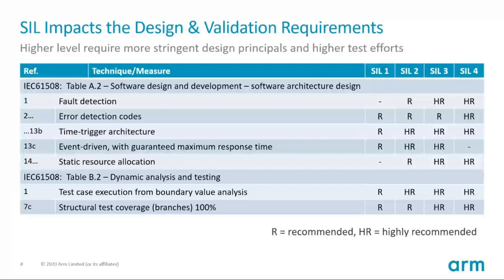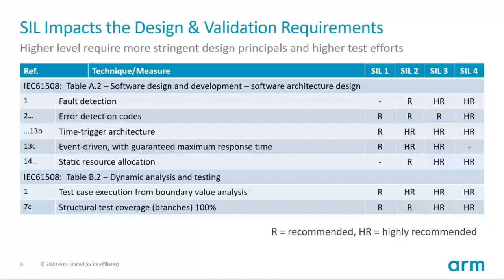This impacts the design principles and test efforts. Here you see a very small portion of the IEC 61508 requirements — the full standard has several pages of them. For example, table A2 describes software design and table B2 is about testing. These tables either recommend or highly recommend certain techniques that you should apply to your system. Higher SIL levels have higher requirements. For example, SIL 3 and SIL 4 highly recommend static resource allocation, meaning dynamic memory allocation is discouraged. System designers are therefore interested to reduce the SIL level for their development.